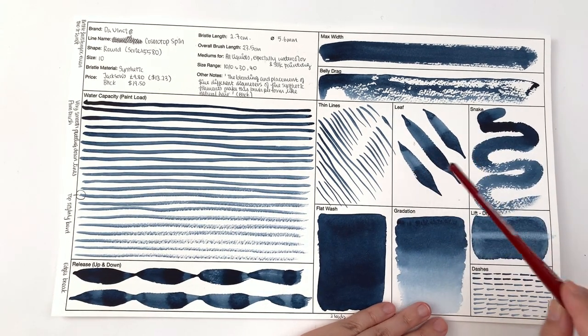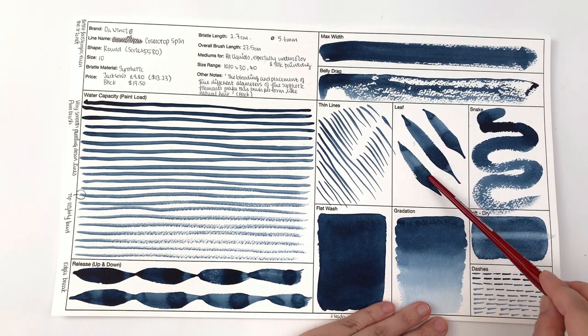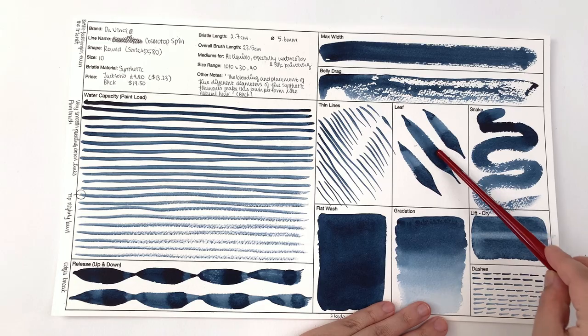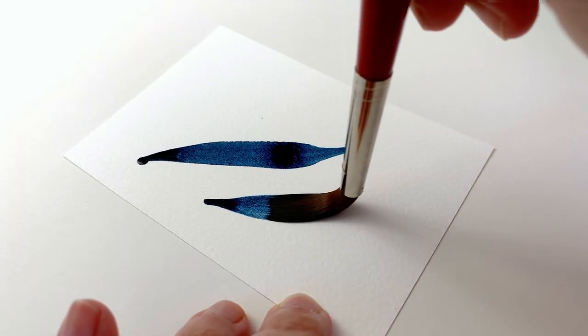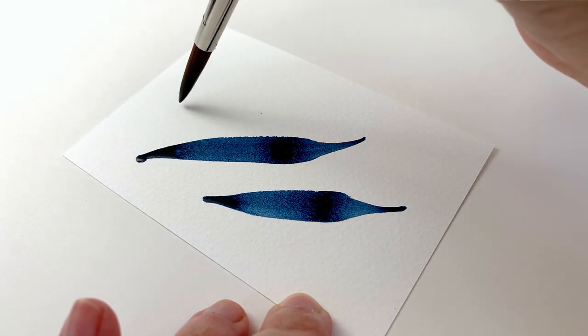For the leaf it's the same thing as the release up and down in that the edges break, so again it's not very good for pulling paint across a page, although you might be looking for this kind of look. It just depends on what you are after from your brush.